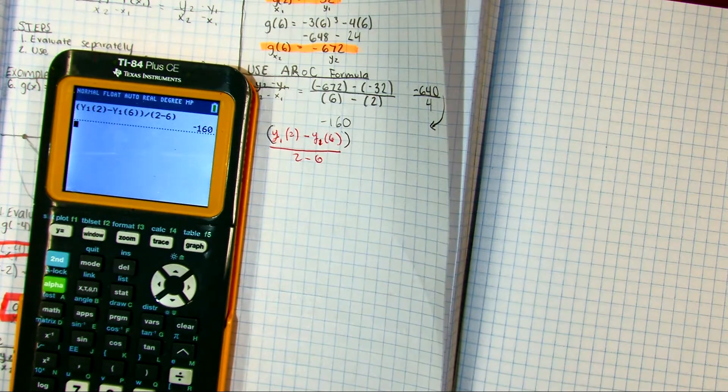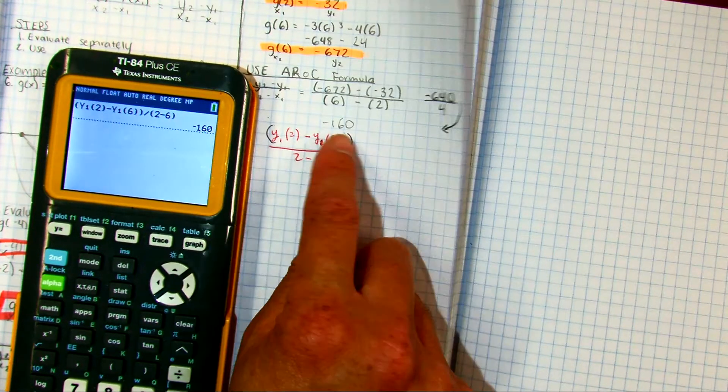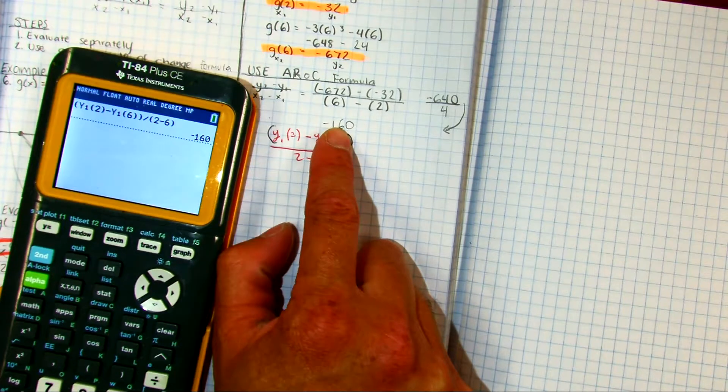And then if you press enter, I got negative 160. And this student, using by hand, they also got negative 160.